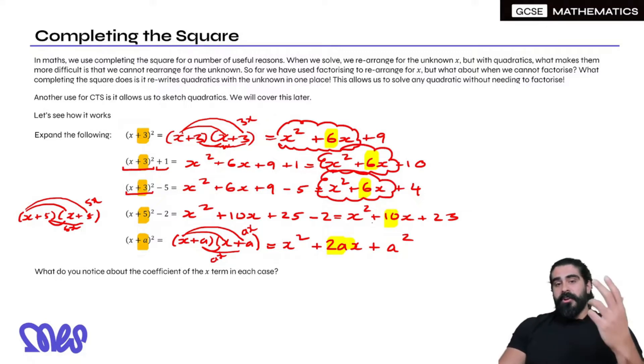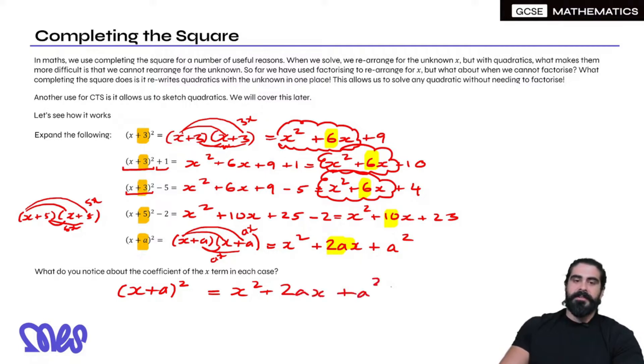The next key thing: we have (x + a)² equals x² + 2ax + a². Because it's all about the coefficient of x, if I subtract a², meaning if I move it to the other side, we get (x + a)² - a² = x² + 2ax.